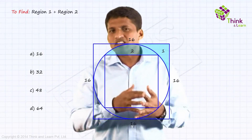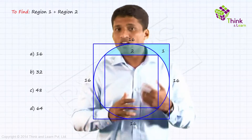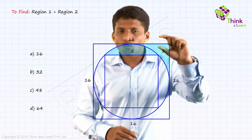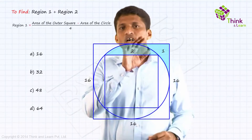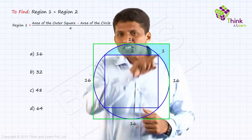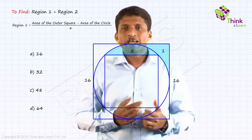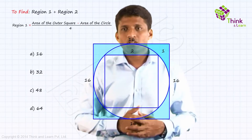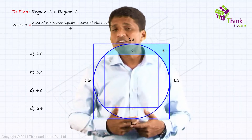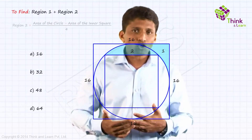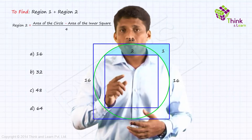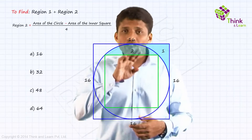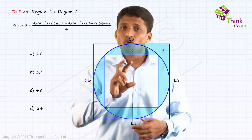There is a very good chance that 99% of you are solving it this way. How will you find region 1? Region 1 is area of the square minus area of the circle, and you will divide it by 4 — because as you can see, there are 4 equal regions. Same way, how will you find region 2? Region 2 is area of the circle minus area of the inner square, and there again you will divide it by 4, because as you can see, there are 4 regions like 2.